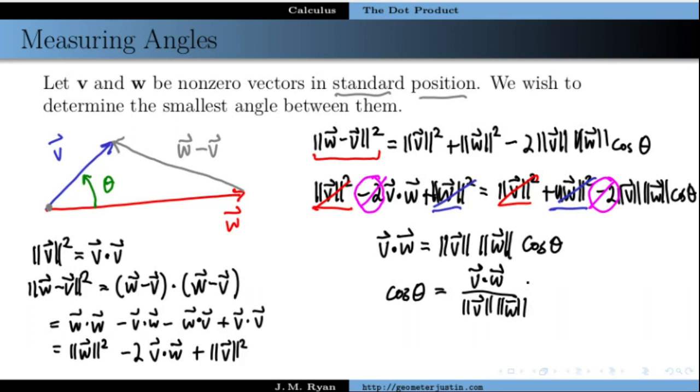And then to solve for theta we just apply the arc cosine. So theta is equal to the arc cosine, or the cosine inverse of this ratio.